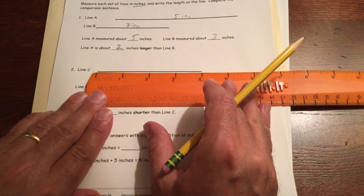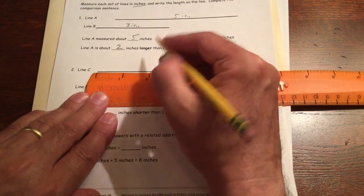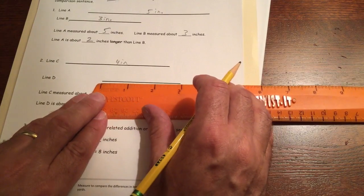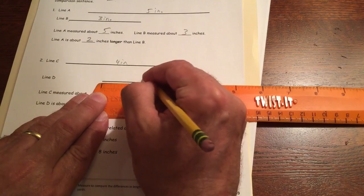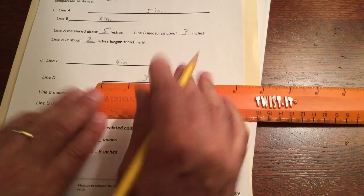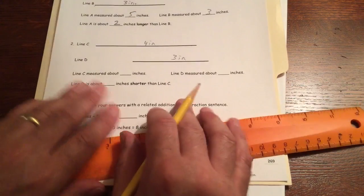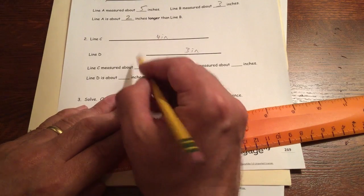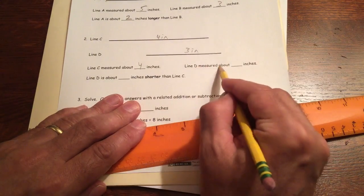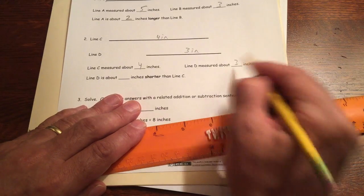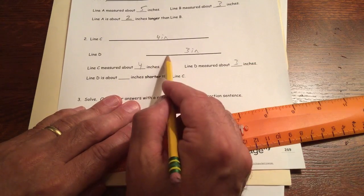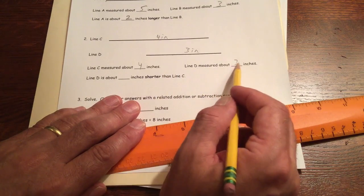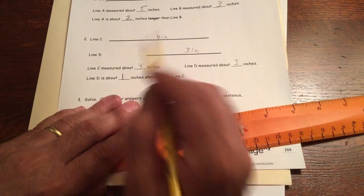Line C. That's 4 inches. Line D. That's about 3 inches. And then line C measured about, line C is about 4. Line D is about 3. Line D is about, line D is shorter. So 3 is 1 inch shorter than 4. So it's about 1 inch shorter.